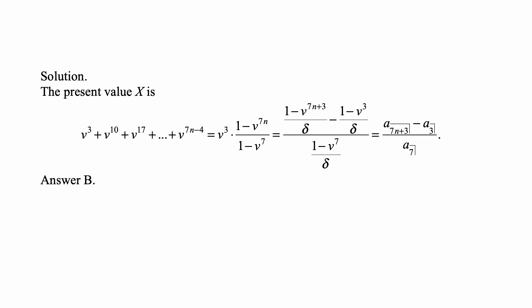And that's the same as v cubed, if we pull it out in front, and what is left inside is a partial sum of a geometric series, which must be equal to 1 minus v to the 7n over 1 minus v to the 7th.